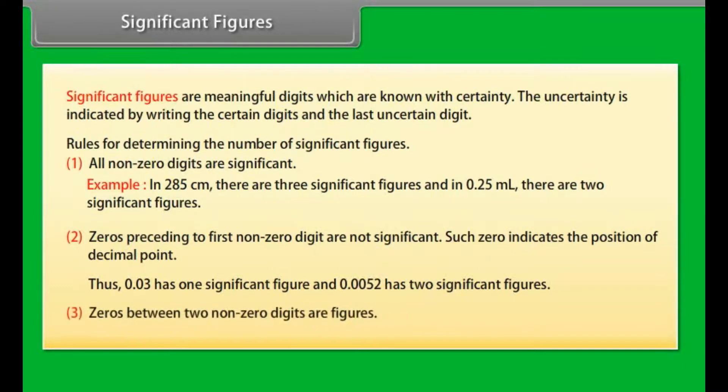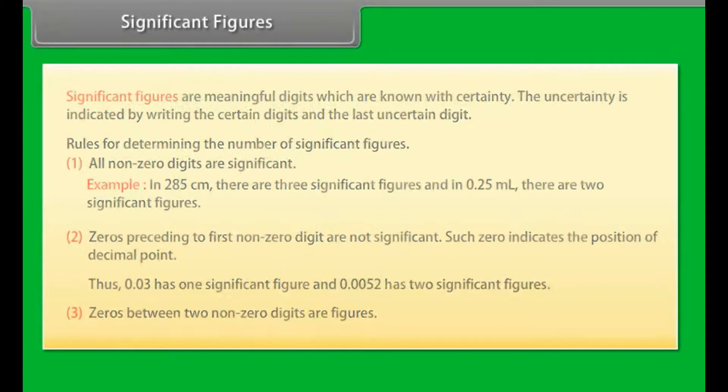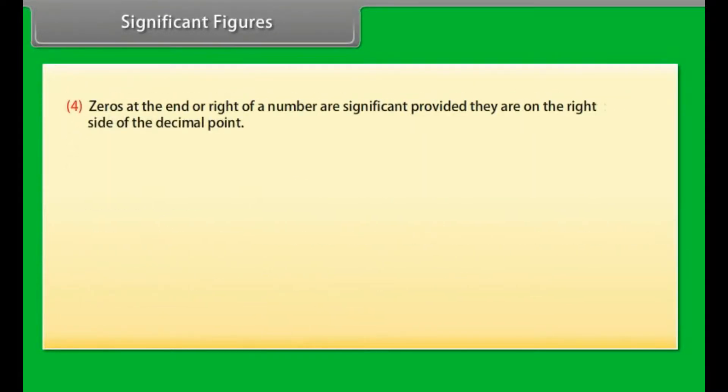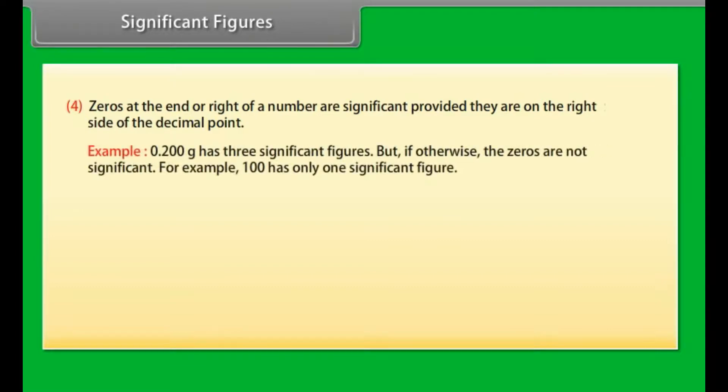Zeros between two non-zero digits are significant. Zeros at the end or right of a number are significant provided they are on the right side of the decimal point. Example: 0.200 gram has three significant figures. But if otherwise, the zeros are not significant. For example, 100 has only one significant figure.